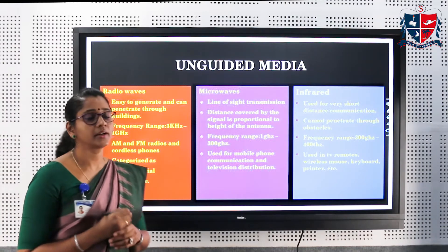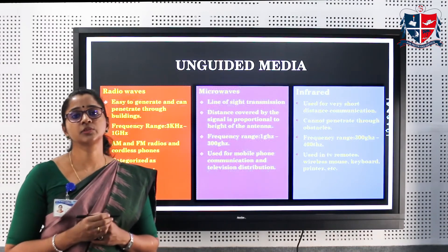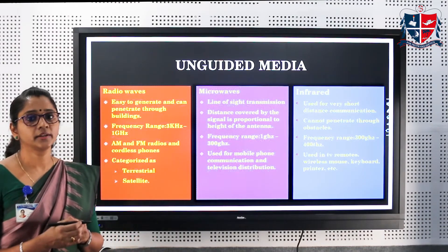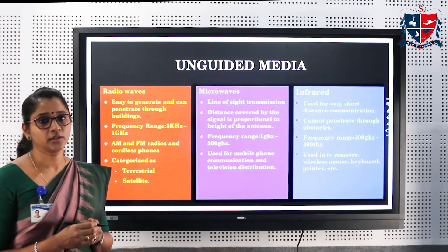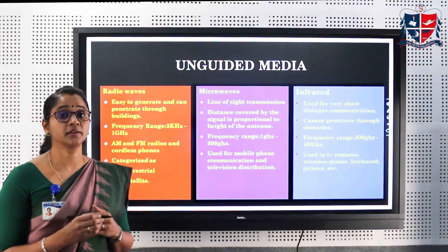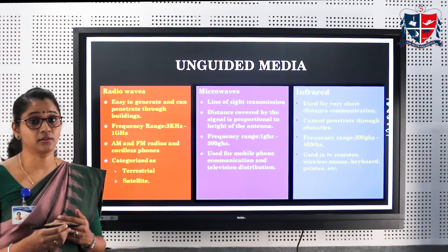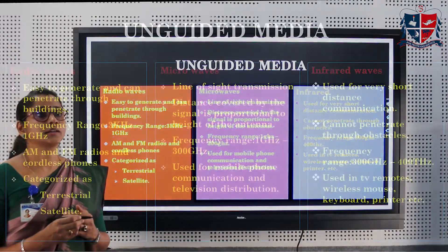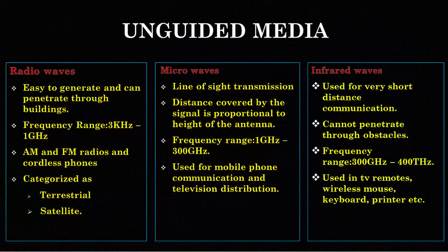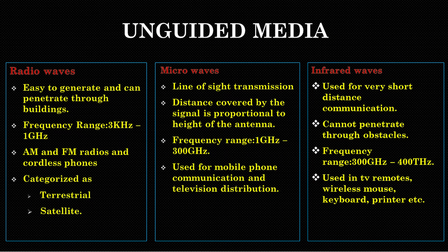Infrared is usually used for small, short distance transmission, but it cannot penetrate through opaque obstacles. It is commonly used in wireless mouses, TV remotes, etc.